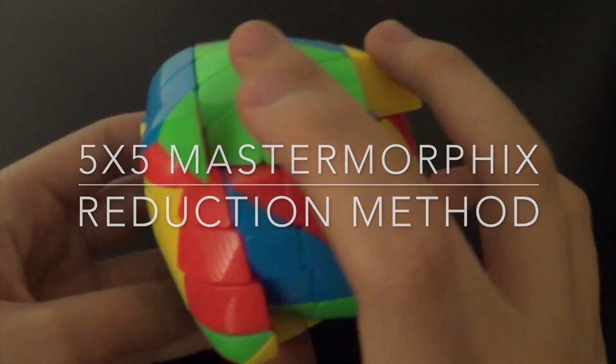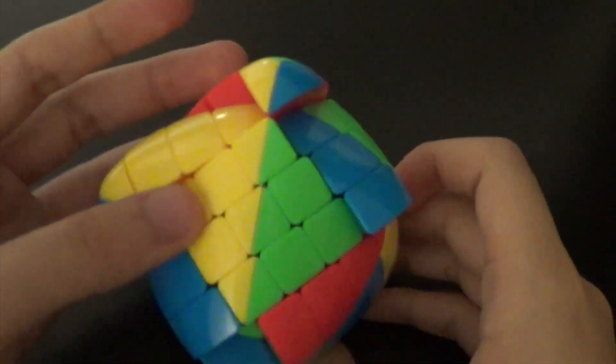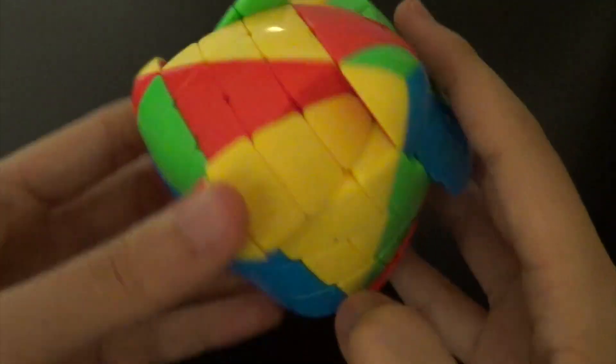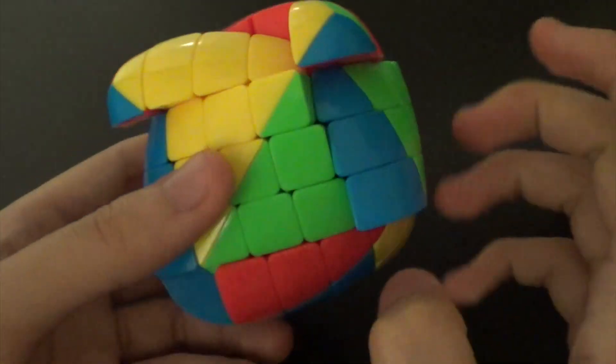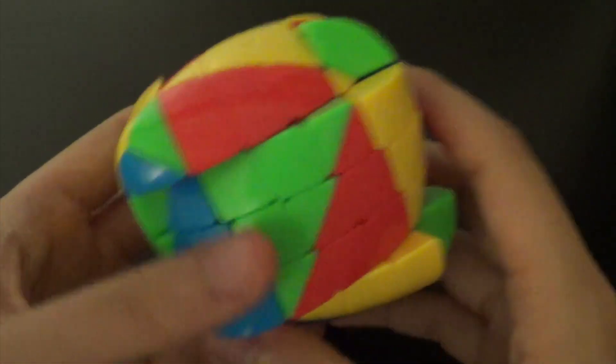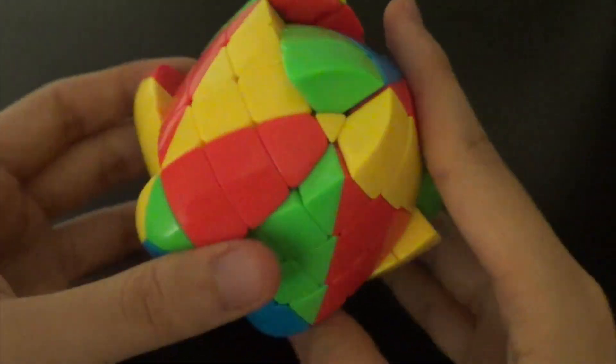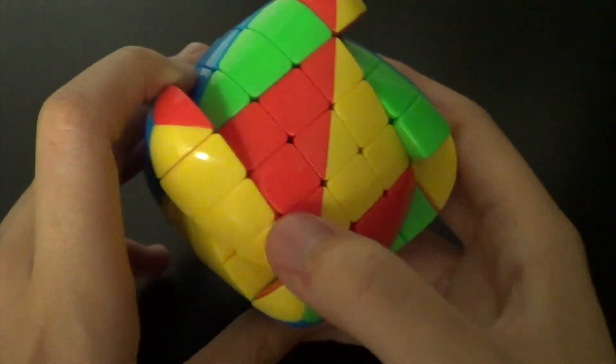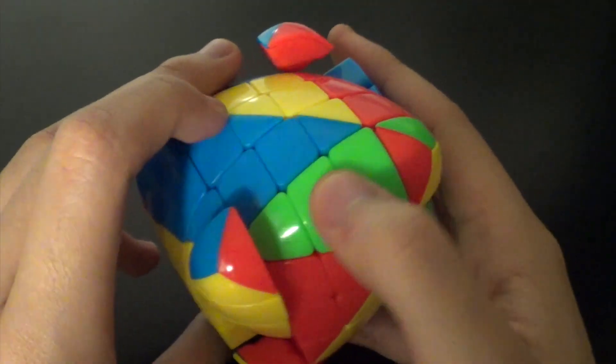All right guys, welcome back. This is going to be the last video in the series because all we're doing here is a reduction method for solving this like a 3x3 mastermorphics. Since we have all the centers and the edges already solved, we're only going to be manipulating the outer edges.